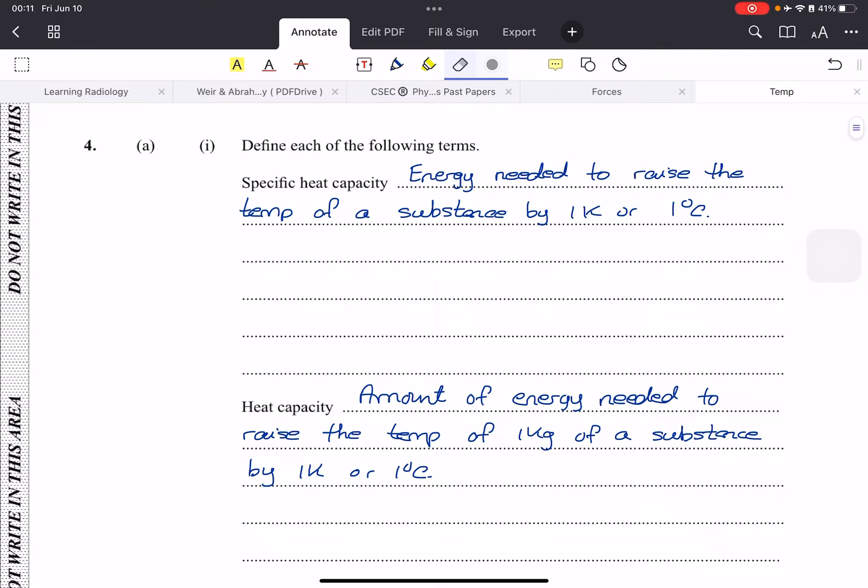This is heat capacity, and the main difference between these is that in specific heat capacity we don't take into consideration the mass of the substance, but in heat capacity it depends on how much of the substance you have, so the mass.